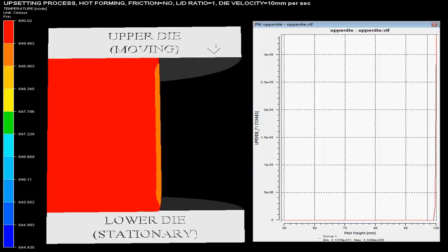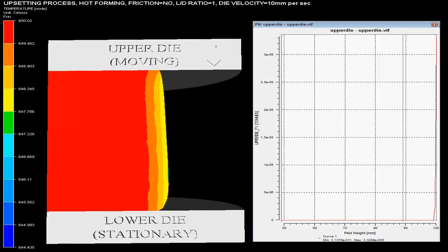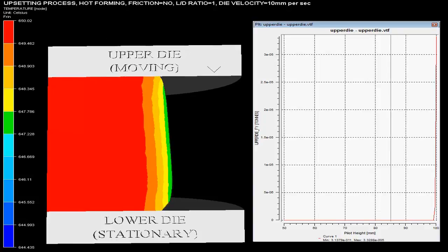The video shows the upsetting operation taking place using a hydraulic press. The initial billet of copper having L by D ratio equal to 1 is taken hot.